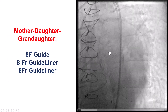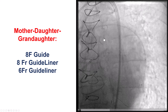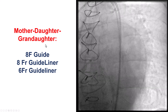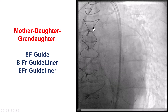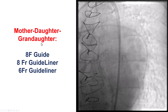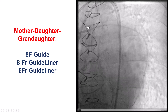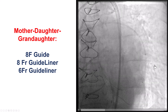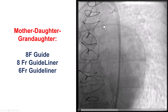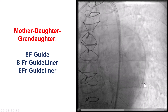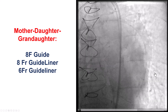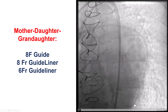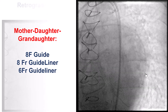How to overcome this problem? There is a technique with guide extensions called the mother-daughter-granddaughter technique. The mother is the 8-French guide, the daughter is an 8-French guide extension, and the granddaughter is a 6-French guide extension. Essentially we have a three-layer telescoping system — a guide, a first large guide extension, and a second smaller guide extension — that can provide stronger support.